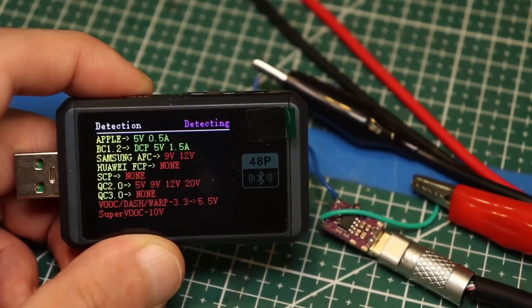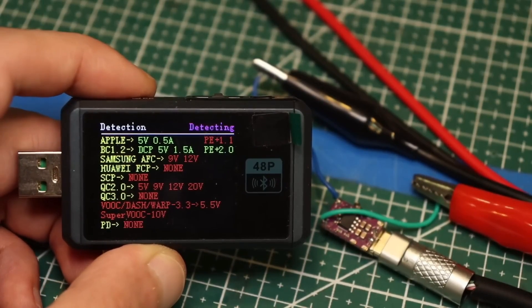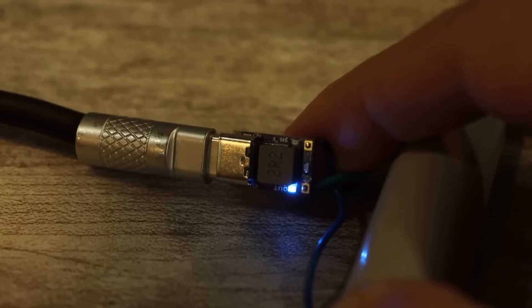There are no fast charging protocols here. The maximum output is 5 volts. Type-C, of course, is bi-directional. It works both for charging the battery and for charging your gadgets.